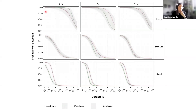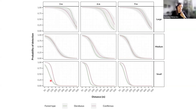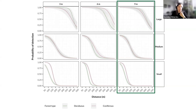We can also divide the probability of detection between different heights. The situation is very similar to what we had previously: the medium group is very stable when comparing transects, and there are more prominent differences in the large and small groups. Again, this is specific to our setup. In this case, the fewest detections were recorded at nine meters height.